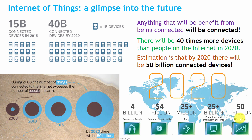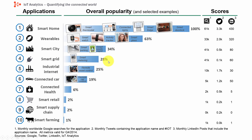These devices will generate around 50 trillion gigabytes of data. Looking at IoT analytics, smart home ranks first based on scores gathered from Google search, Twitter, and LinkedIn — with smart thermostats, connected lights, smart fridges, and smart door locks being top searched. Second is wearables — smart watches, activity trackers, and smart glasses. Third is smart city, then smart grid, industrial internet, connected car, connected health, smart retail, smart supply chain, and smart farming. This was a short introduction about the Internet of Things, giving an overview and a future glimpse.